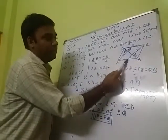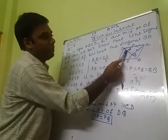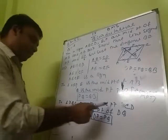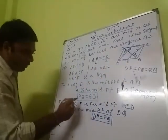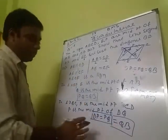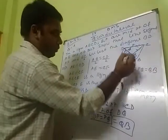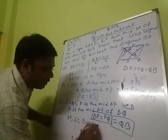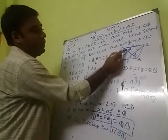So from triangle ABP: E is the midpoint, therefore Q is the midpoint of PB, giving us PQ equals QB. From triangle DQC: F is the midpoint of CD, therefore P is the midpoint of DQ, giving us DP equals PQ. Combining both results: DP equals PQ equals QB. Therefore AF and EC trisect the diagonal BD, meaning they divide BD into three equal parts.